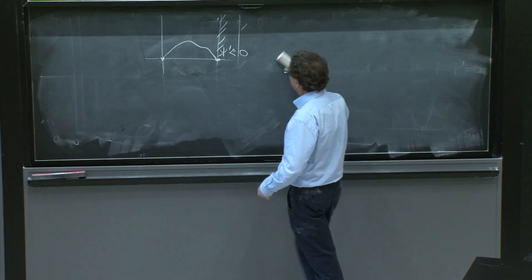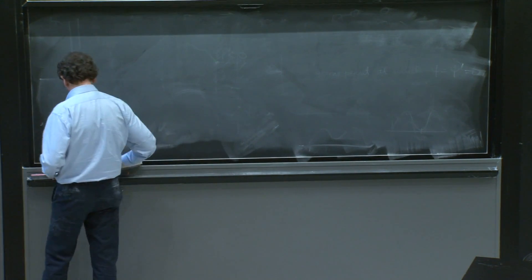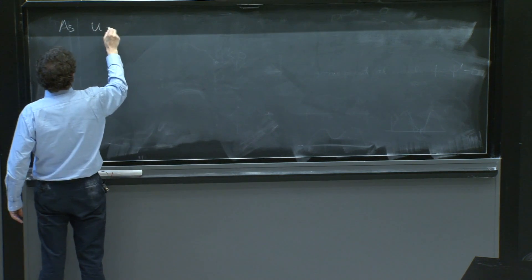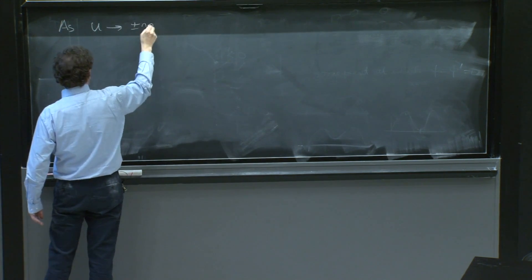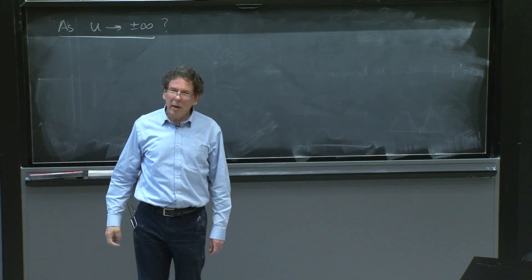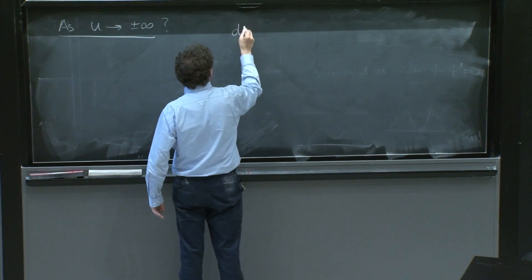What does this equation become as u goes to plus minus infinity? Well, this equation at that stage becomes like this.